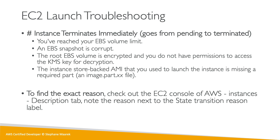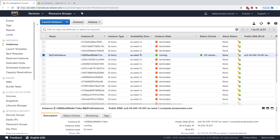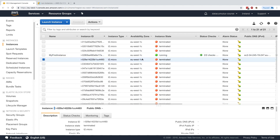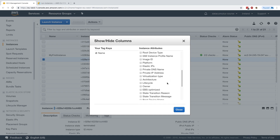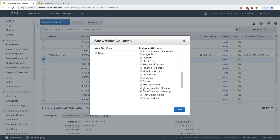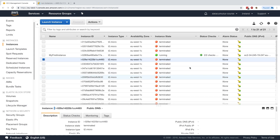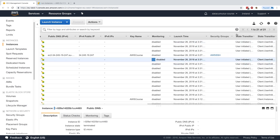To find the exact reason in real life, check the description tab — there is a 'state transition reason' label. I cannot trigger this problem here, but in your console, click on the cog wheel on the right-hand side, scroll down, and you'll see 'state transition reason' and 'state transition message' columns added at the end.